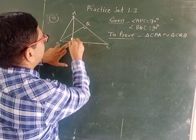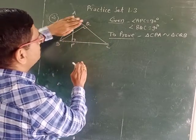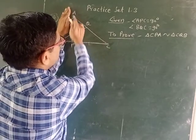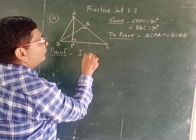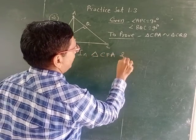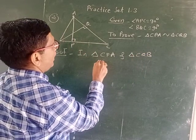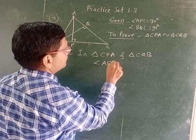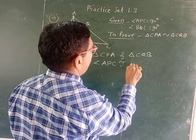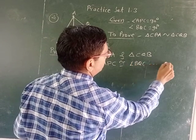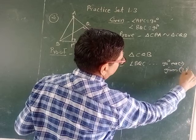Consider triangle CPA and triangle CQB. In triangle CPA and triangle CQB: angle APC is equal to angle BQC, each equal to 90° — this is given. That is statement 1.